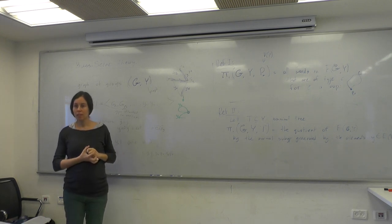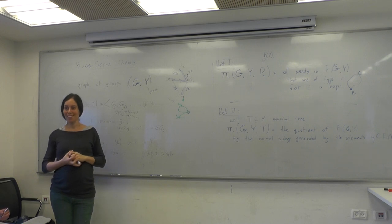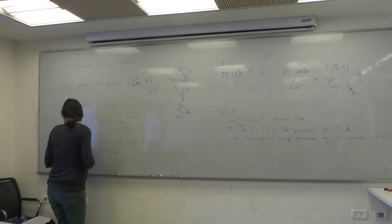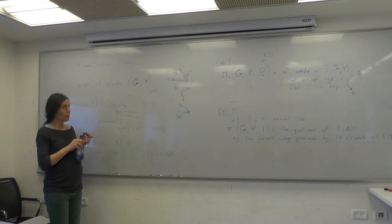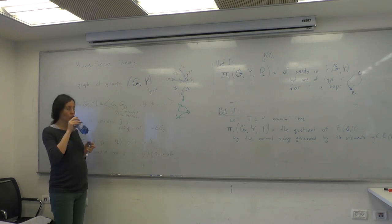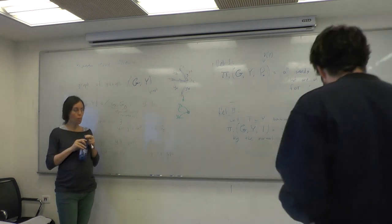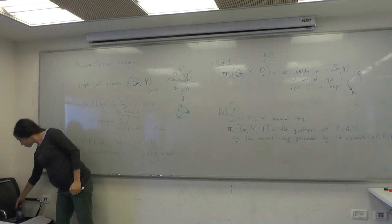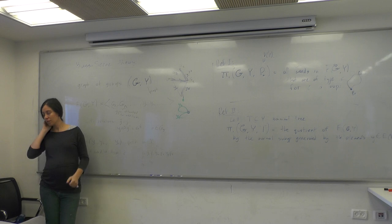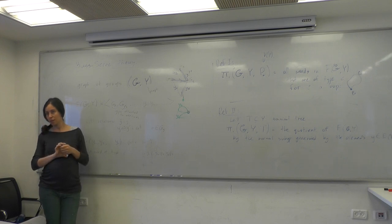The two basic building blocks from which we construct graphs of groups are: first, when the graph is a single edge — that gives an amalgamated product; and second, when the graph is a single vertex with a loop — that is called an HNN extension, a concept that appeared much before the general graph of groups framework. Note that in the amalgamated product there is a group attached to the edge, whereas in the HNN extension there is no group attached to the edge, only to the vertices.